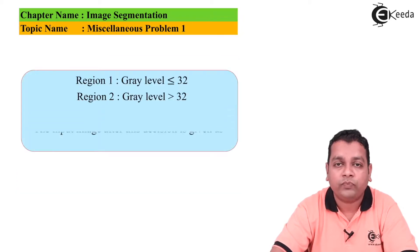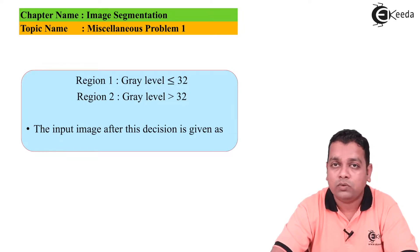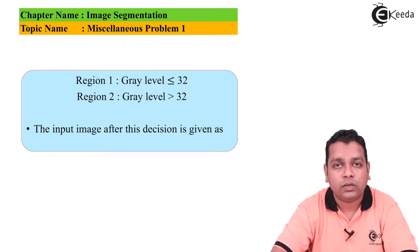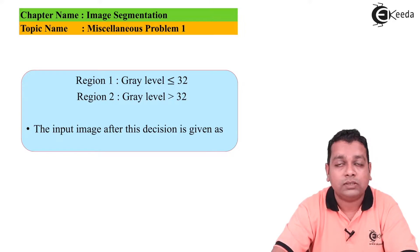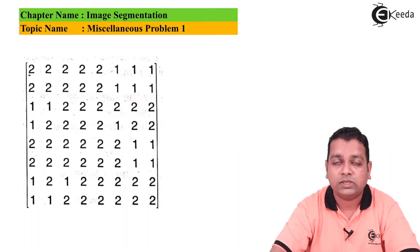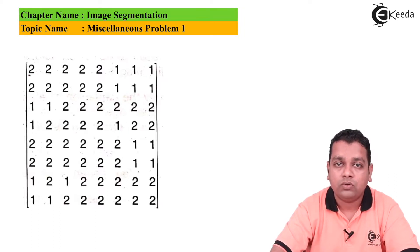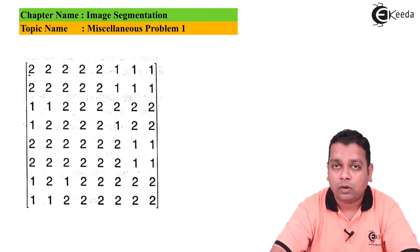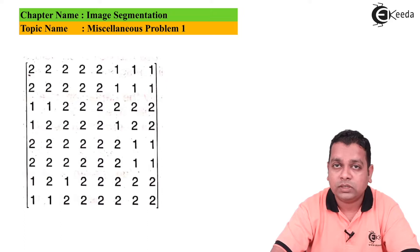Region one is defined as gray level values less than or equal to 32, and region two is defined as gray level values greater than 32. Applying this to the input image, we obtain the segmented image with the same dimensions — eight rows and eight columns. In the first row, we get the label sequence 2, 2, 2, 2, 1, 1, 1 — the first five elements belong to region two and the last three to region one. The second row is similar: the first five elements belong to region two and the last three to region one.